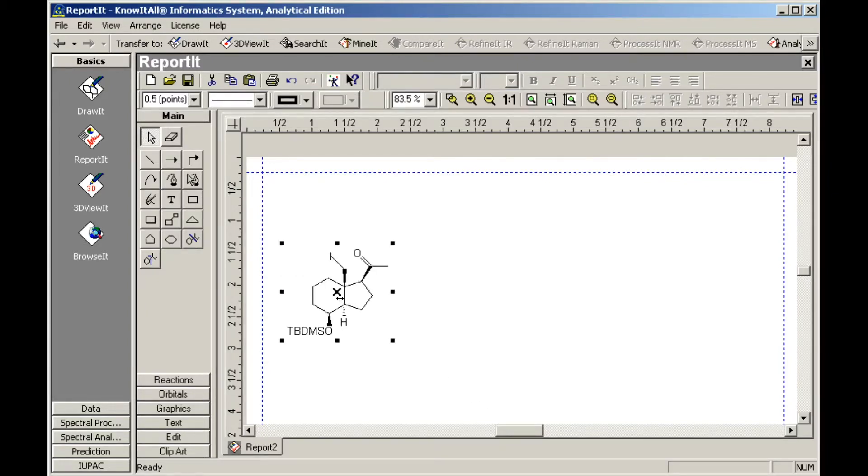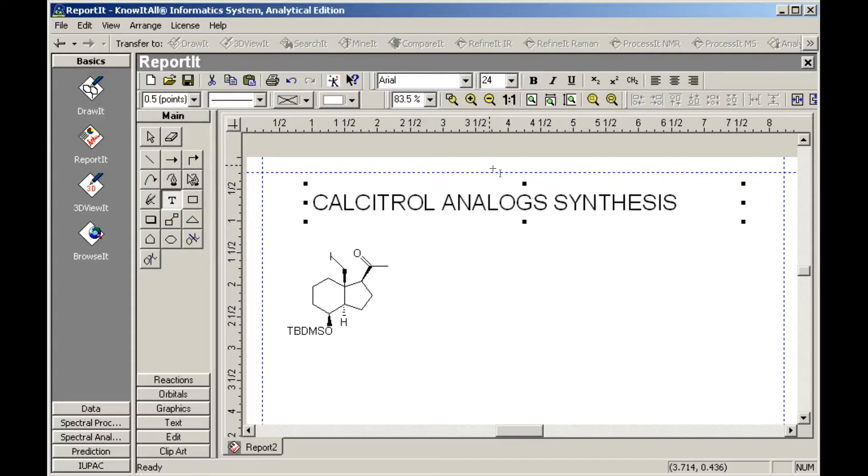Now we'll use the Text tool to add a caption to the page. Select the tool, then click and drag to create a text box. Adjust the font size, then begin typing. Use the Center Alignment tool in the Text Style toolbar to center the text within the text box.